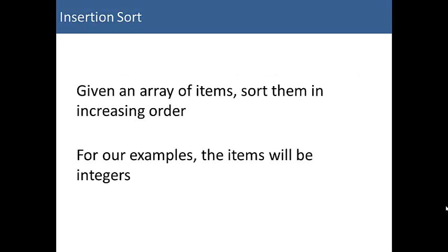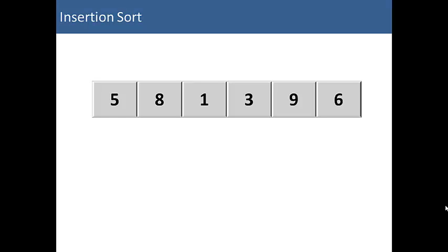So given an array of items, let's sort them in increasing order. For our example in this video, the items will simply be integers. So let's look at a sample list of items. We have a list of 6 items that we want to sort. And we'll number them from 0 to 5. And the first item, 5,